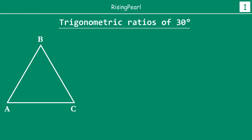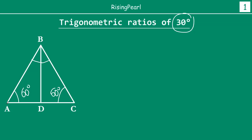We are going to start with a small construction. We are going to draw ourselves an equilateral triangle, and you may wonder why we are drawing an equilateral triangle instead of a triangle that has a 30 degree angle — you will see that just in a moment. We are going to find the midpoint between A and C, call it D, and then join BD.